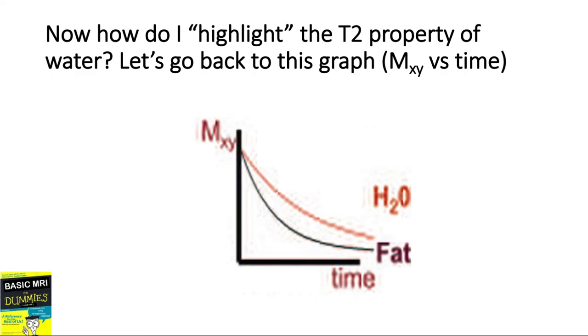Now, if I want to highlight the T2 property of water, should we listen to the echo at time point A or time point B? So we should listen to the echo at time point B. And this would represent the long TE time. This means that for T2 weighted sequences, the main property is the long TE time. You might encounter the use of the term heavily weighted T2 weighted sequence. It just means that a longer TE time is used.